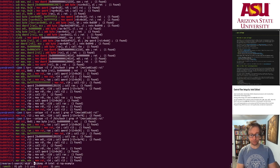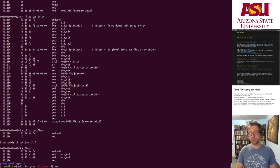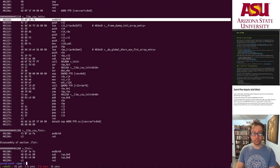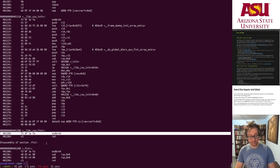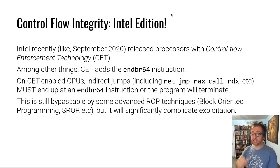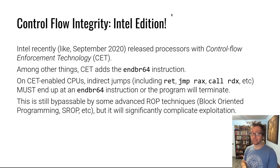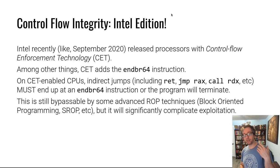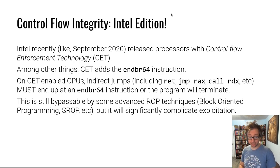On Ubuntu 20.04, at the beginning of every function is this `endbr64` instruction. `endbr64` tells a CET-enabled processor: this is a valid target of an indirect control flow transfer. The processor makes sure that when you do a `ret`, the next instruction you execute is `endbr64` — otherwise it kills the program. On processors without CET, those instructions simply do nothing; they are literally a no-op.